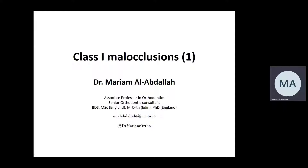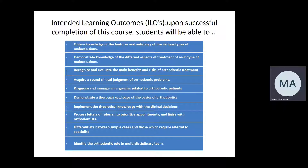This is our first lecture in our theoretical course, and we have to start with the intended learning outcomes. In general, it's to obtain knowledge of the features and etiology of the various types of malocclusions, demonstrate knowledge of the different aspects of treatment of each type, recognize and evaluate the main benefits and risks of orthodontic treatment, acquire a sound clinical judgment of orthodontic problems, diagnose and manage emergencies related to orthodontic patients, demonstrate thorough knowledge of the basics of orthodontics, implement the theoretical knowledge with clinical decisions, process letters of referral to prioritize appointments, liaise with orthodontists, differentiate between simple cases and those which require referral to specialists, and identify the orthodontic role in a multidisciplinary team.